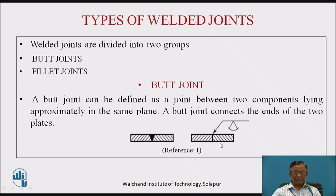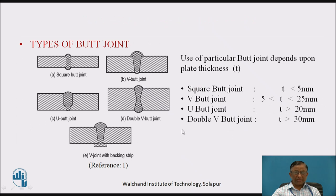Welded joints are broadly classified into two groups: butt joints and fillet joints. In a butt joint, the two parts lie in the same plane and are connected at the end by a butt weld as shown. The various types of butt joints used in practice are: square butt joint, V butt joint, U butt joint, and double V butt joint.